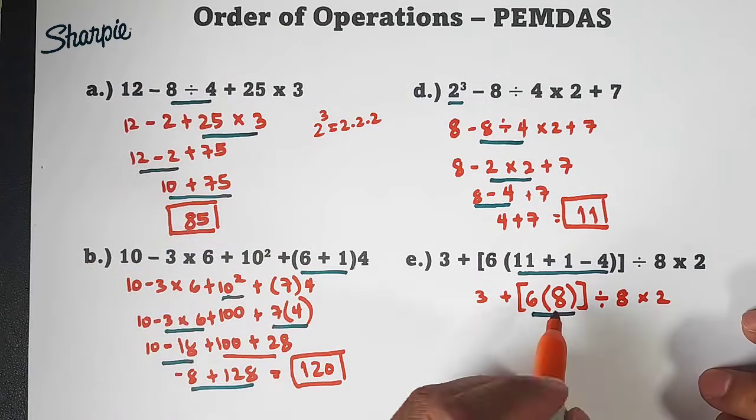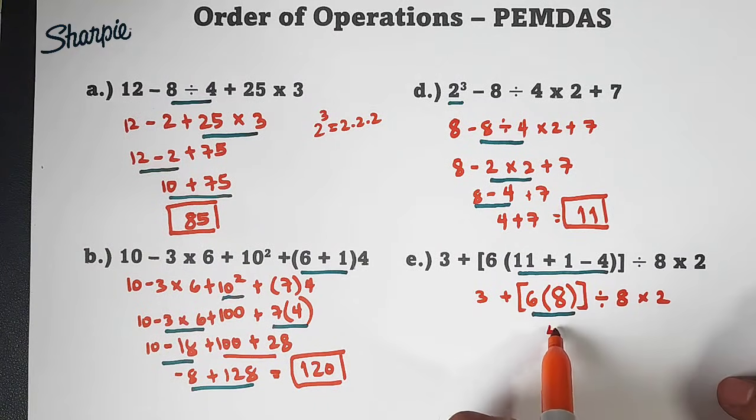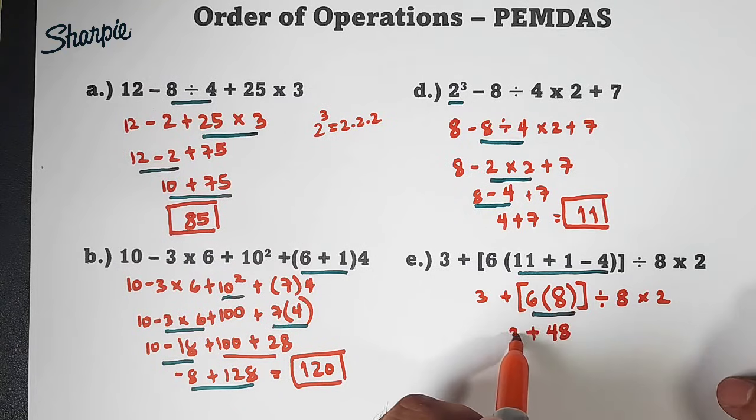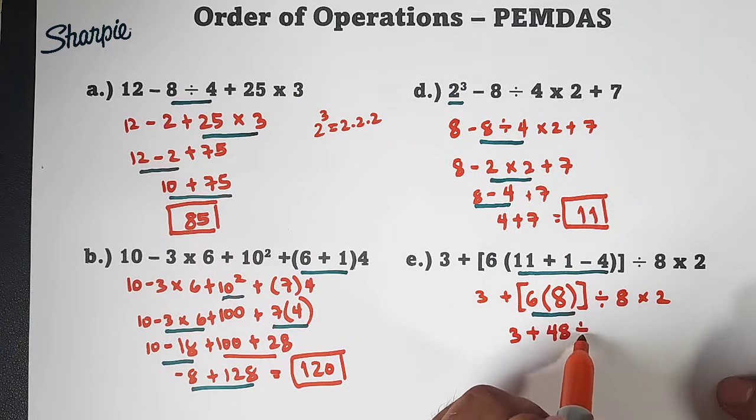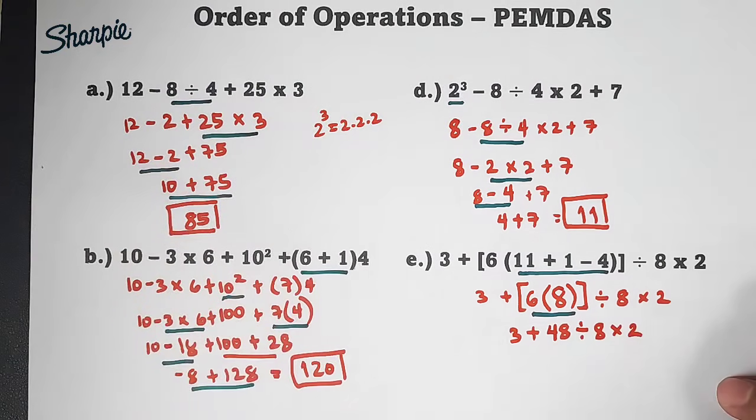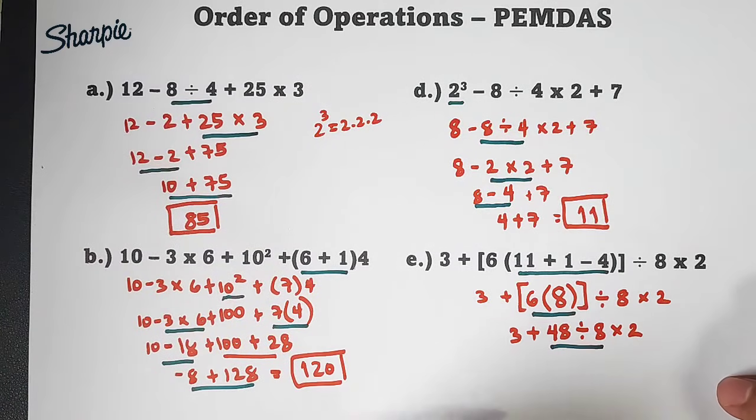48. Then here we have plus 3, divided by 8 times 2. Obviously, this is next. Our 48 divided by 8 is 6. So this is 6. Then plus 3, then times 2. So this. This is next. This is 12. Then plus 3.